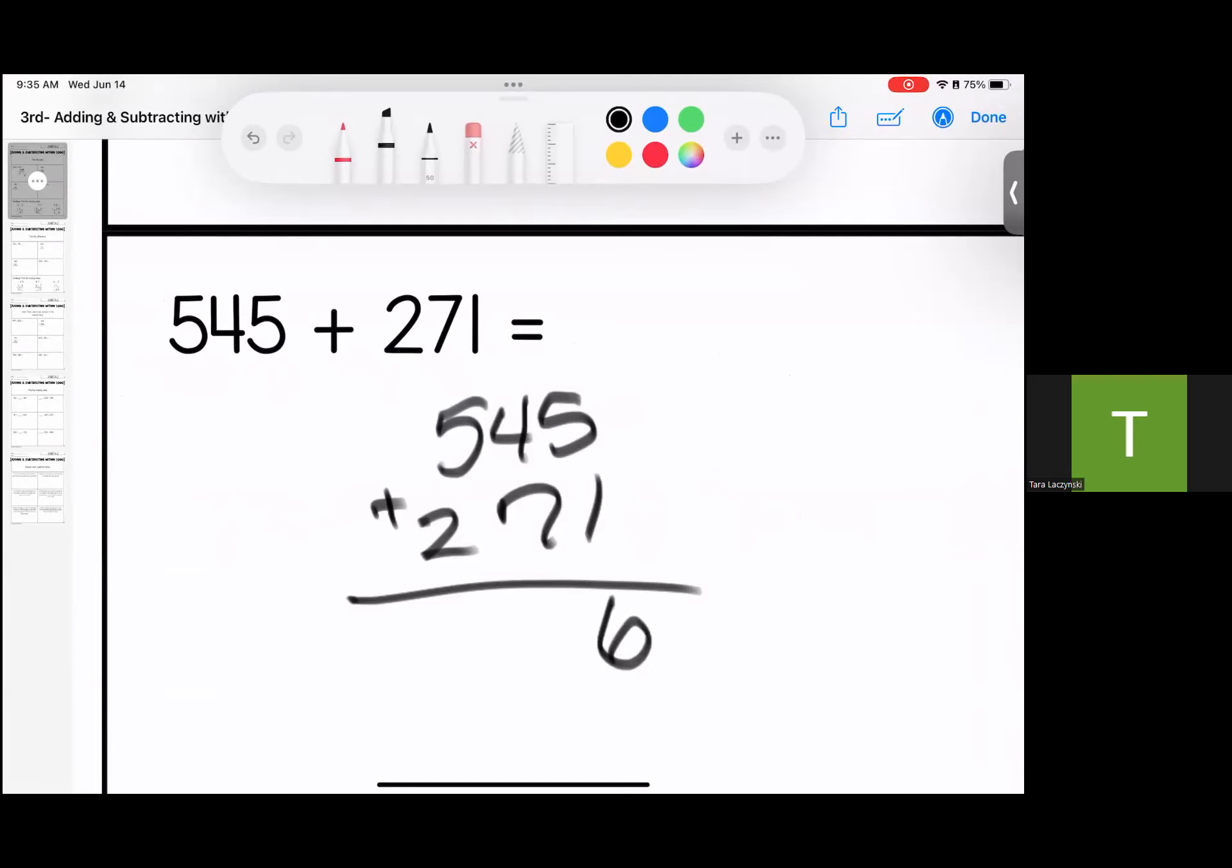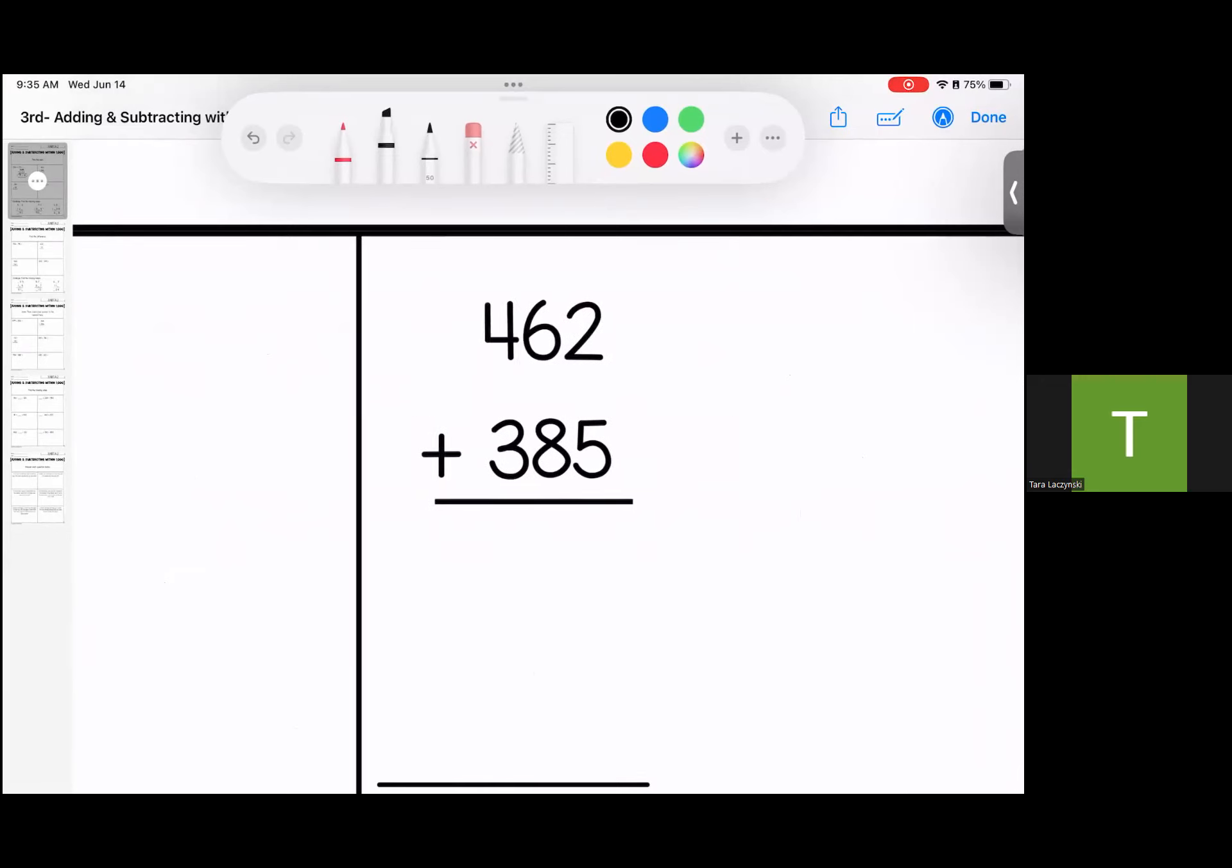5 plus 1 is 6. 7 plus 4 is 11. 5 and 1 is 6, add 2 is 8, for 816.